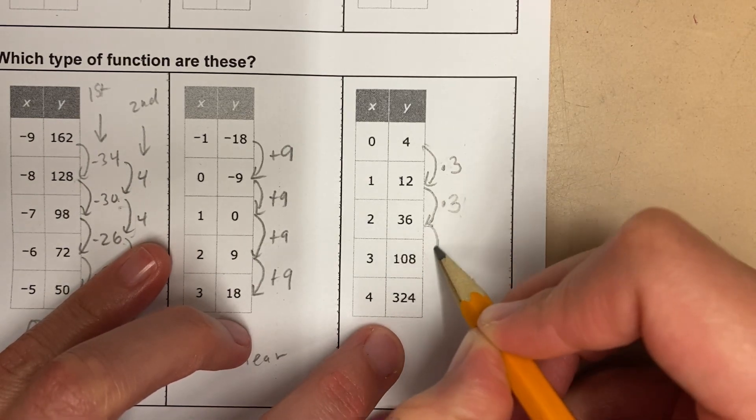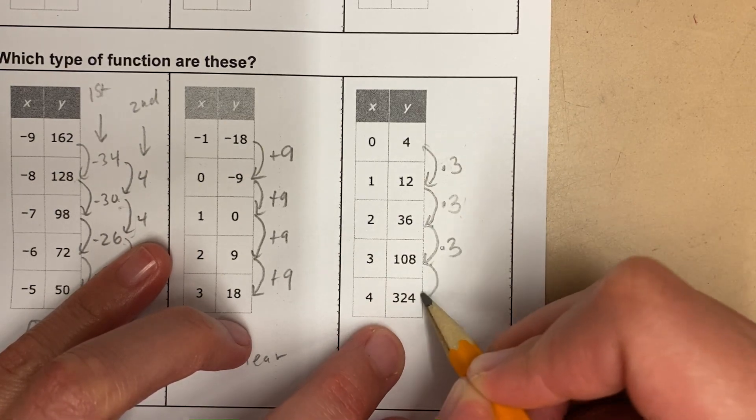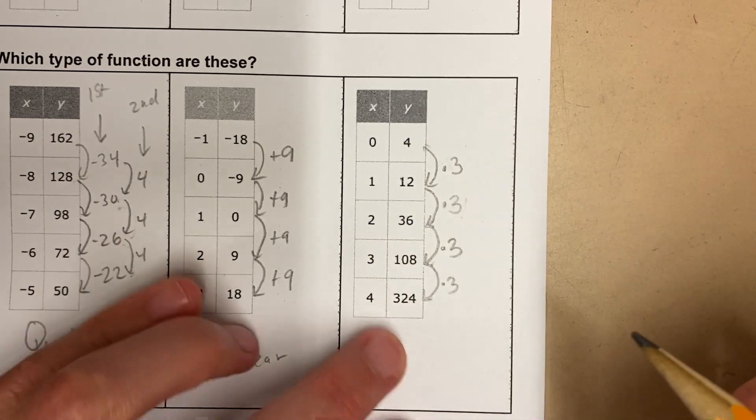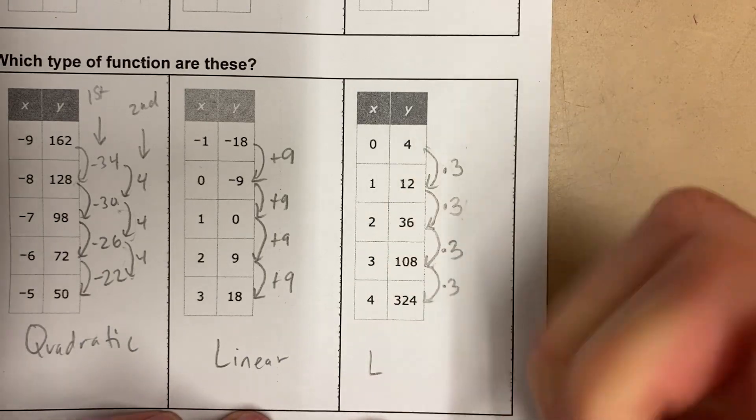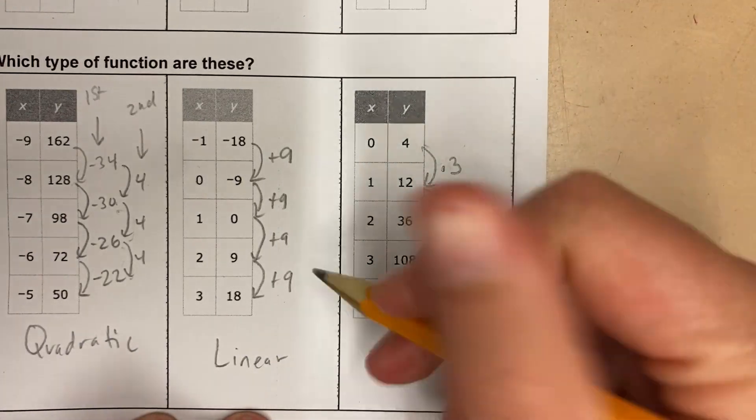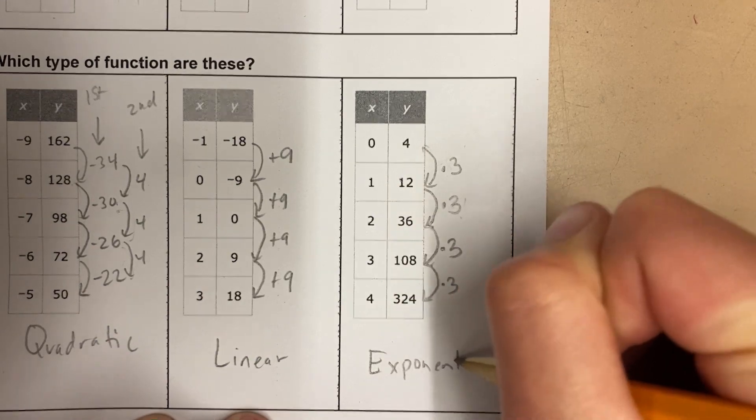Is 108 times 3, 324? Yep. So this is multiplying from row to row. This is exponential.